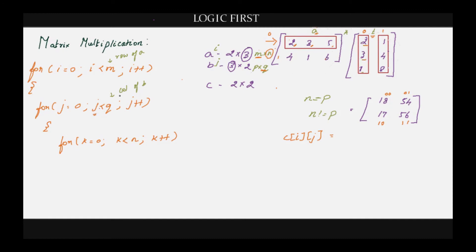We also have to access the elements of B. With j we only know the column of B, but what about the rows of B? The rows of B should go from 0 until P. Since N and P are equal, we can use this same variable k for both the column of A and the row of B. Let's write the code.